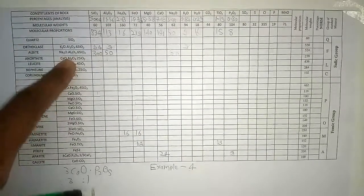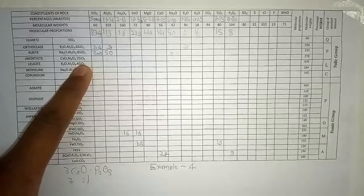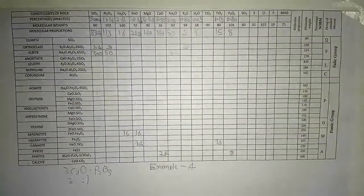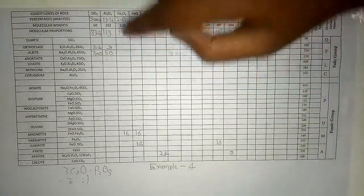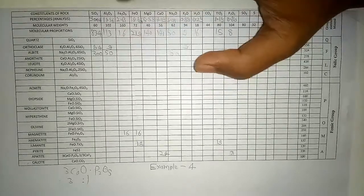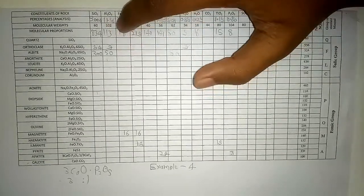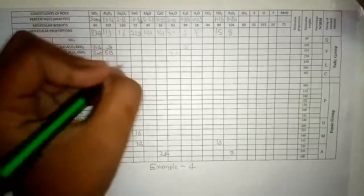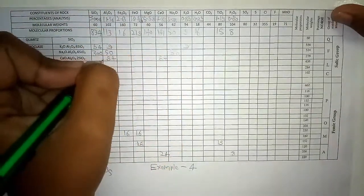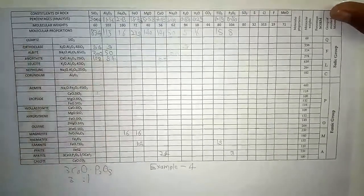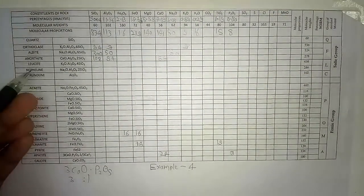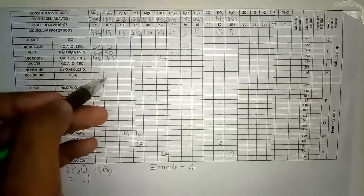For anorthite the ratio is 1:1:2. We check how much Al2O3 remains: we have 113 total, already used 50 in albite and 9 in orthoclase = 59 used. So 113 minus 59 = 54 Al2O3 remaining. We can therefore make only 54 anorthite, using 54 CaO and 108 SiO2. Can we make leucite? No — K2O is fully used in orthoclase. Nepheline? No — Na2O is fully used in albite. Corundum? No — Al2O3 is finished. Acmite? No — Na2O was used in albite.